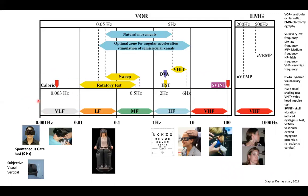The calorics are at 0.03 Hz and the spontaneous gaze at 0.01 Hz. Other tests like the rotary chair provide information about low and medium frequency. The video head impulse test provides information between 3 and 6 Hz. We can do dynamic visual acuity and head shaking tests around 2 Hz approximately. The skull vibration-induced nystagmus test is at a very high frequency, around 100 Hz. VEMPs can be done at 200 and 500 Hz.